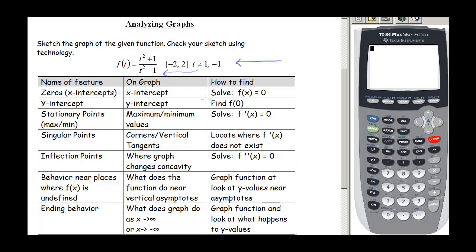Remember the different things that we are going to look for. We're going to look for the x-intercepts — that's where it crosses the x-axis, and those occur where f(x) equals 0. We'll look for the y-intercept, which occurs at f(0). Look for the stationary points — those are the maximum and minimum values of the function, and they occur when f prime equals 0. The singular points are the corners or vertical tangents, and those occur where f prime does not exist. Now one thing to notice is because 1 and negative 1 are restricted from our domain, those won't be possible singular points.